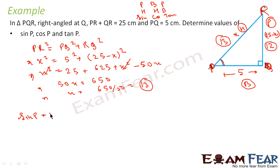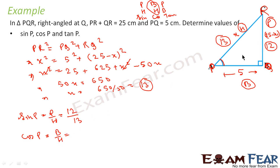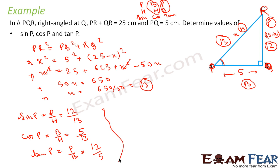So sin P equals P divided by H. P equals 12 and H equals 13, giving sin P equals 12 by 13. Cos P equals B divided by H, where B equals 5 and H equals 13, giving cos P equals 5 by 13. Tan P equals P divided by B, which is 12 divided by 5, giving tan P equals 12 by 5.